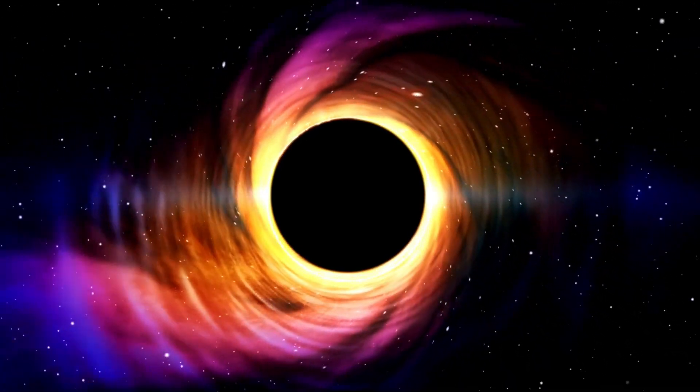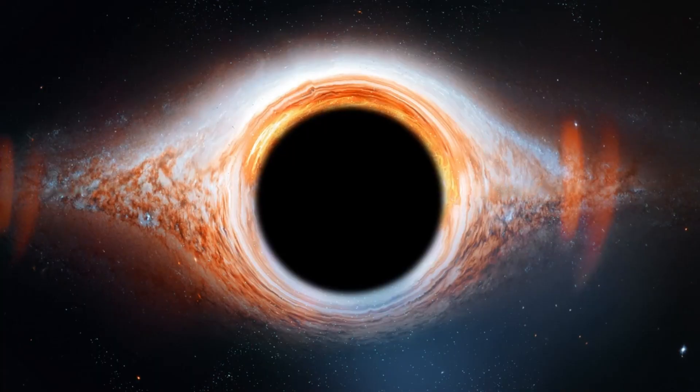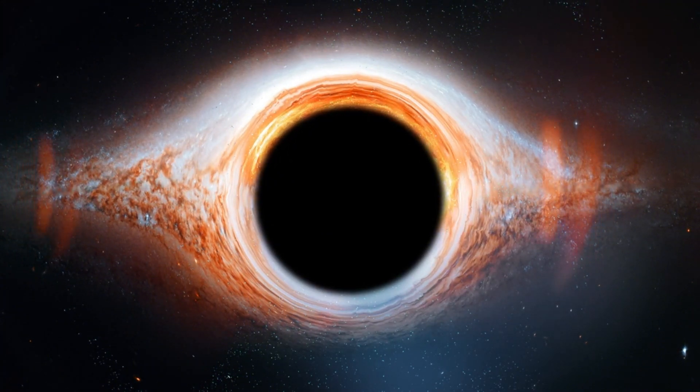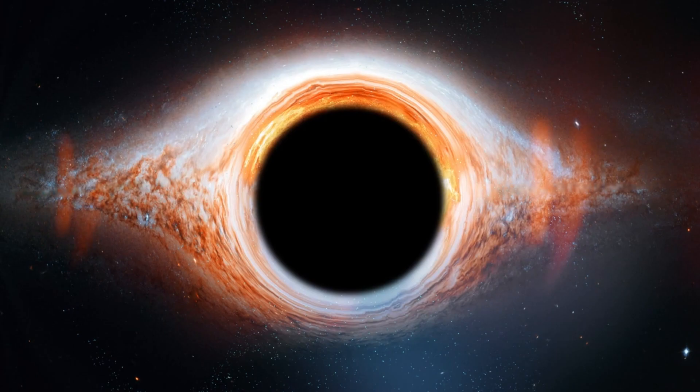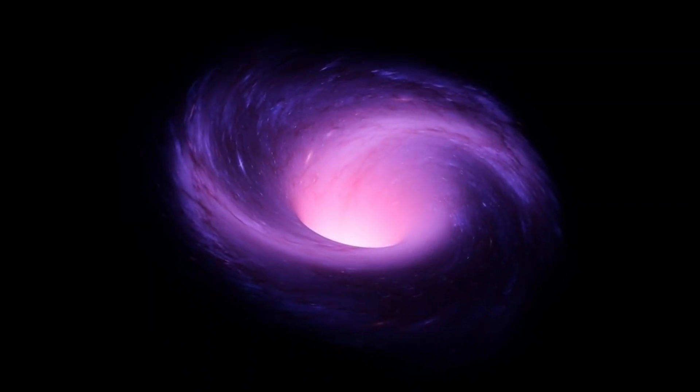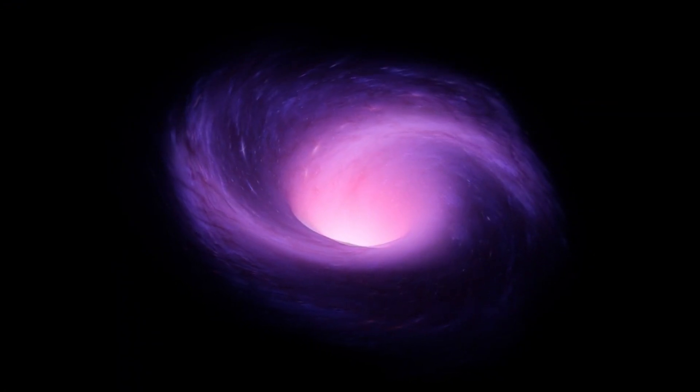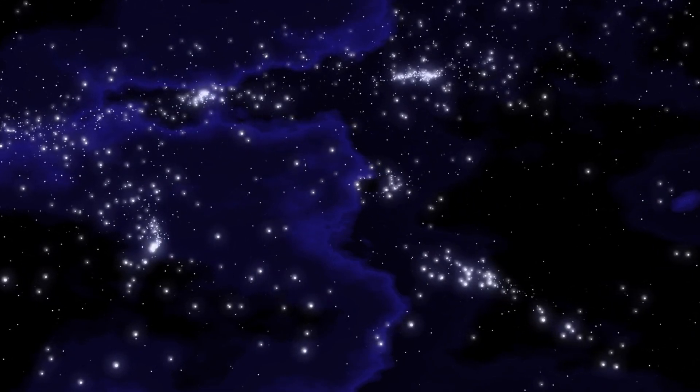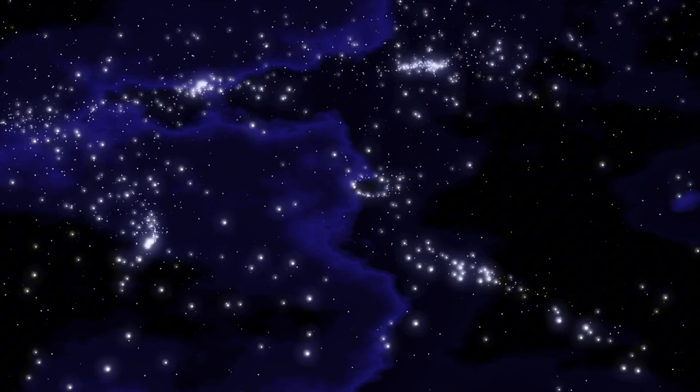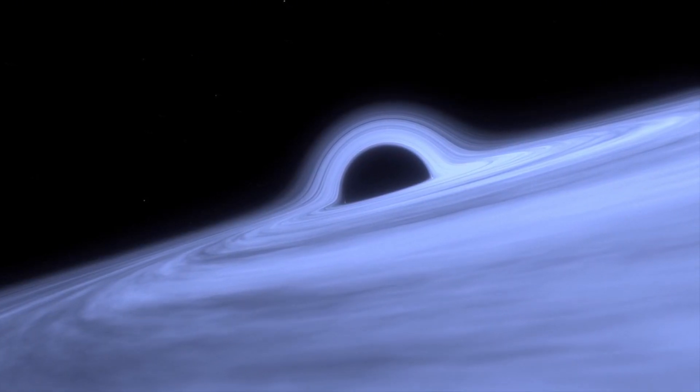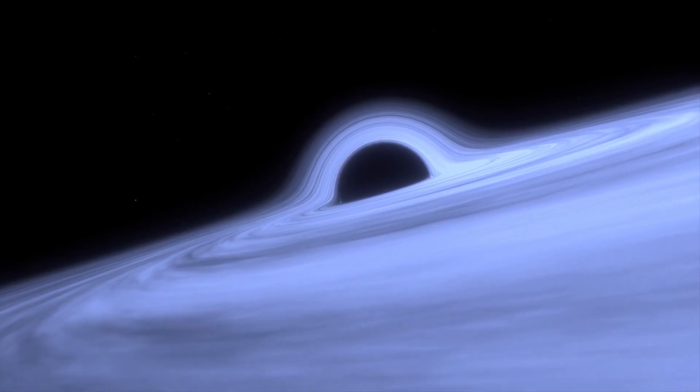They are subjected to extreme tidal forces and ultimately consumed by the singularity at the dark opening's core. This catastrophic interaction, known as spaghettification, represents the extreme manifestation of a dark opening's gravitational strength. As an object approaches the event horizon, the gravitational gradient across its length becomes so extreme that it is stretched and contorted into a filamentary structure resembling strands of spaghetti. The forces overpower the internal bonds keeping the object intact, resulting in its disintegration.